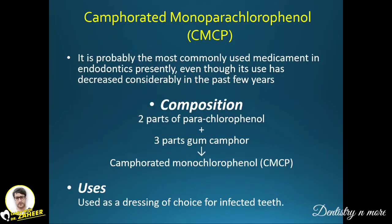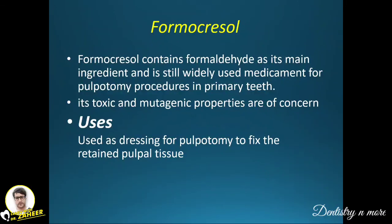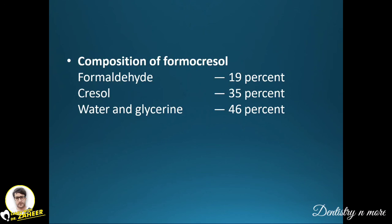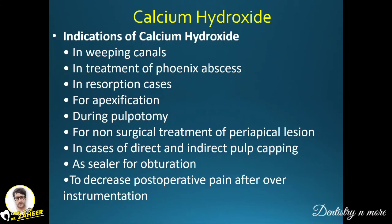Formocresol contains formaldehyde as its main ingredient and is still widely used as a medicament for pulpotomy procedures in primary teeth. Its toxic and mutagenic properties are of concern. It is commonly used in pulpotomy to fix retained pulpal tissues. Its composition is 19% formaldehyde, 35% cresol, and 46% water and glycerine.